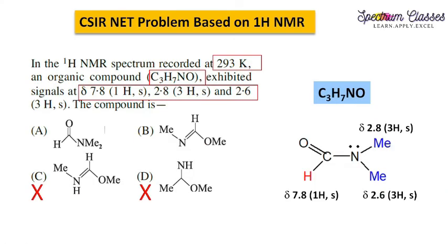I have kept all the chemical shift values here. In my opinion, this methyl group resonates at δ 2.8 because it is nearby to the oxygen, and this methyl group resonates at δ 2.6. In some books these chemical shift values are interchanged. On that basis, option A is correct.